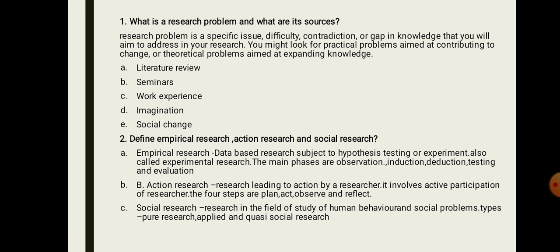Research in the field of human behavior and social problems is called social research. It is classified into three types: pure research, which is purely theoretical knowledge used to establish or expand existing theory; applied research, which is empirical and practical problem-solving; and quasi social research, which applies theory to problems across various disciplines in social science.